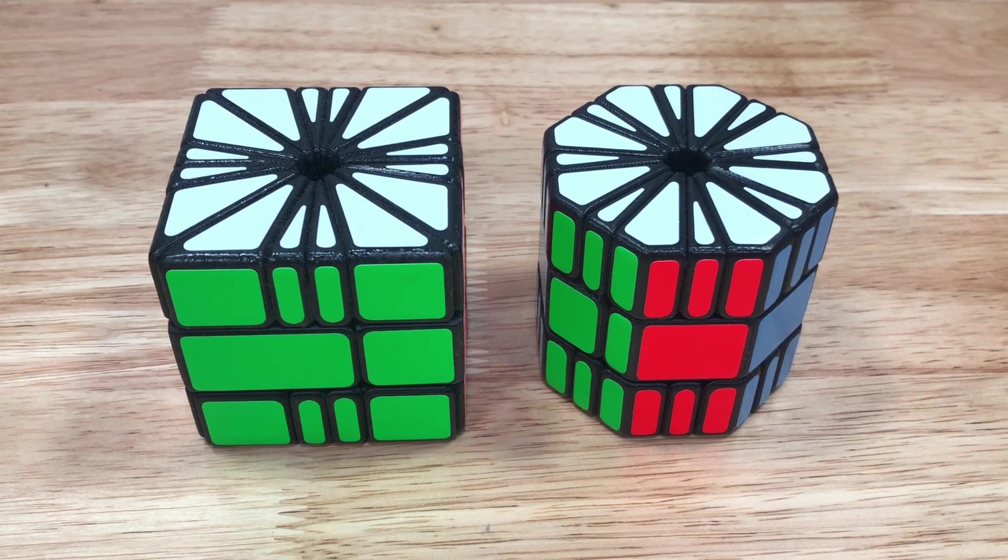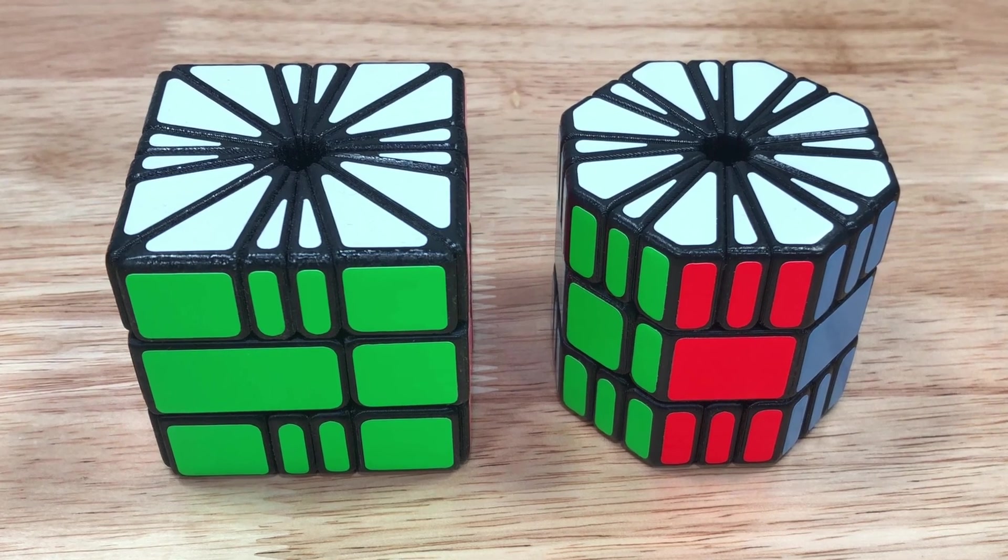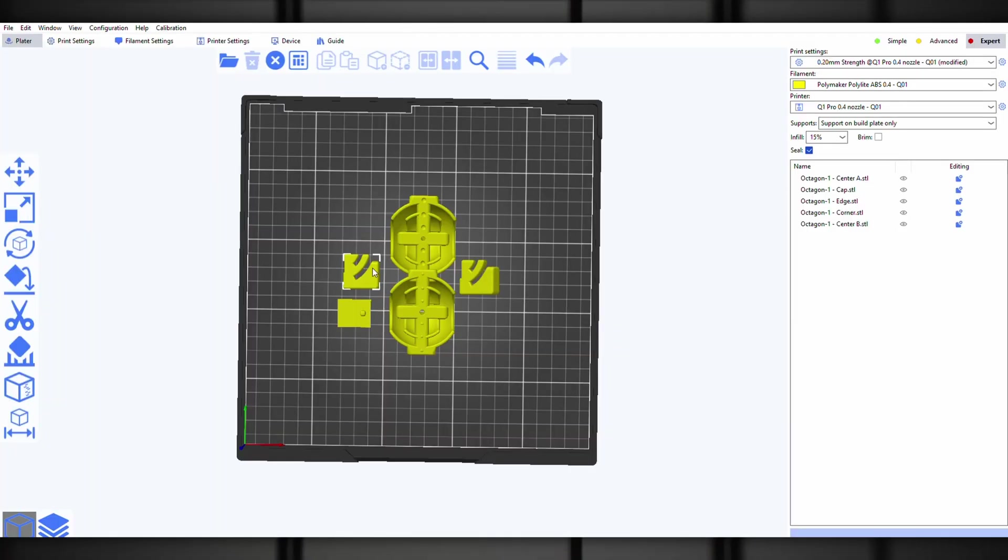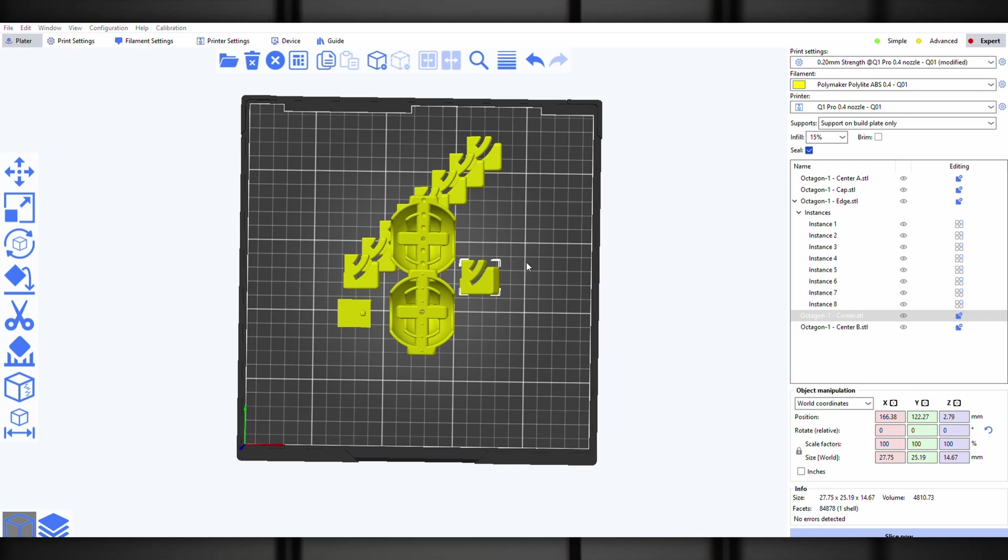Instinctively, I would have actually made the Octagon-1 larger than this, but now I'm interested in seeing the result without scaling anything up. Now that the design's done, it's time to start printing the Octagon-1 parts in ABS on my Chidi Q1 Pro. I was able to fit all of the Square-3 parts into a single print, so I thought I'd do the same for the Octagon-1.